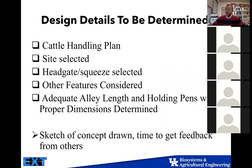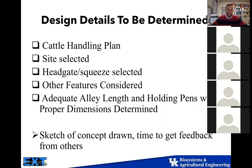Design details: you need a cattle handling plan, review site selection, determine what kind of head gate or squeeze chute you want, and consider other facility considerations — adequate alley length, holding pens, and proper dimensions for the animals being worked. Then sketch a concept drawing and get feedback. Producers often want a drawing immediately and want to build right away, but this is something you want to strategically plan out. It's not a decision to make on a whim.